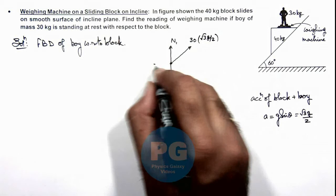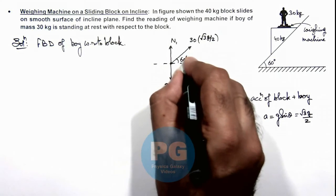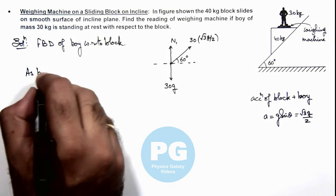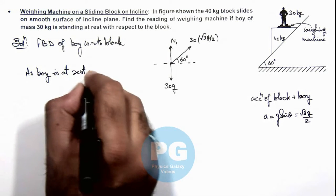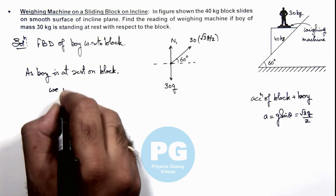And in this situation the boy is at rest and this angle here is 60 degrees. Now in this situation we can write, as the boy is at rest on the block, we use in the normal direction to the surface of this block.